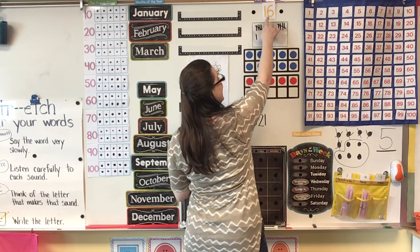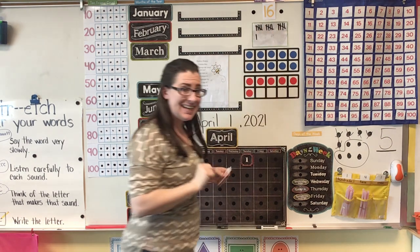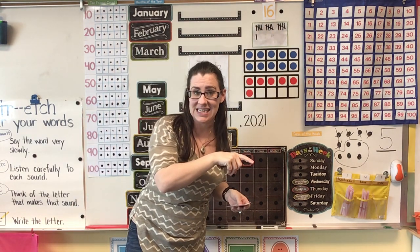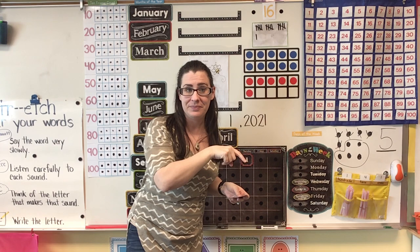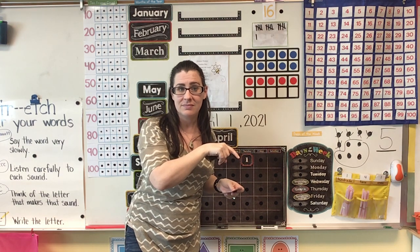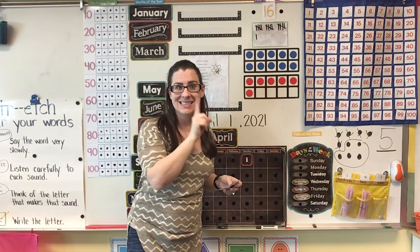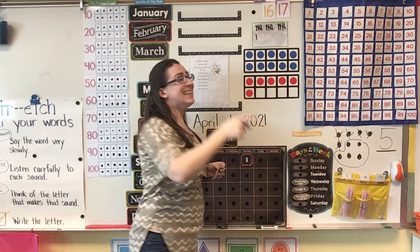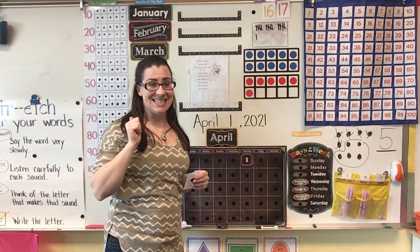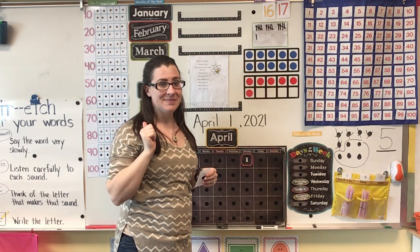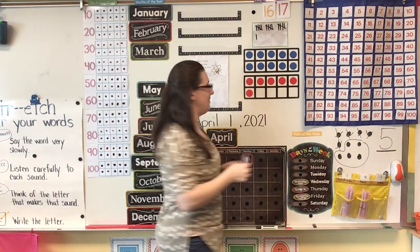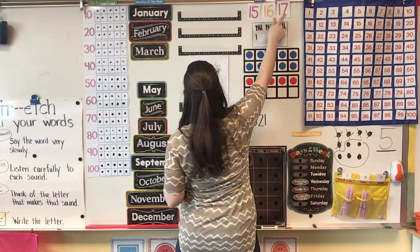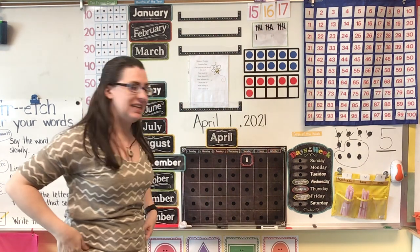So if our number for the day is 16, one more than 16 is 17. And that means one less than 16 is 15 — 15, 16, 17.